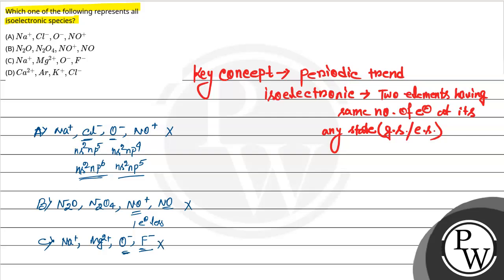Option D to check: it is calcium 2+, argon, potassium+, Cl-. Calcium 2+ means calcium's electron is how many electrons? 20 electrons. Now 2+ means 2 electrons removed, so 18 electrons.